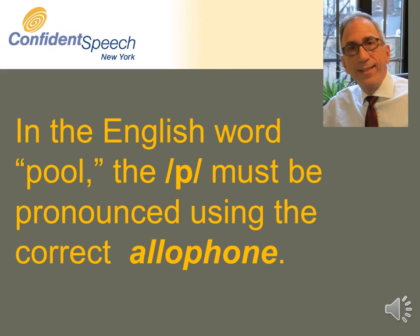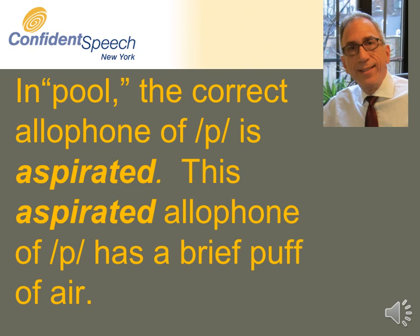For example, in the word 'pool,' the p must be pronounced using the correct allophone. In English, there are several allophones for p, and only one is correct in the word 'pool.' To pronounce 'pool' in English, the correct allophone of p is aspirated — it has a brief puff of air.